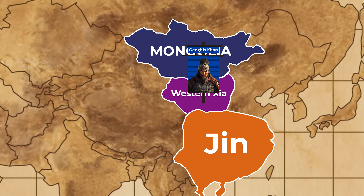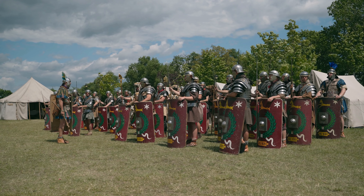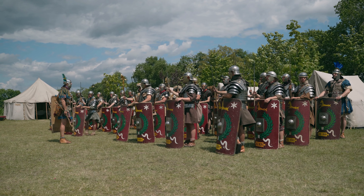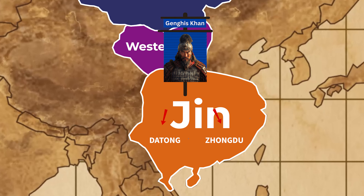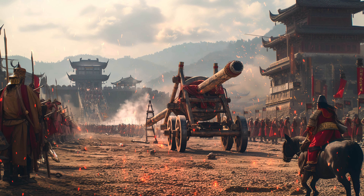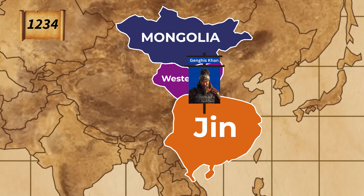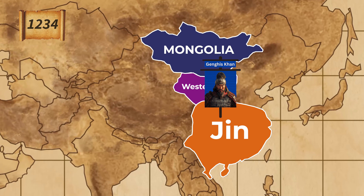Genghis Khan then turned his attention to the Jin dynasty in northern China. In 1211 he began his campaign with around 50,000 to 70,000 troops. The Mongols captured significant cities like Datong and the capital Zhongdu — modern-day Beijing — in 1215. The siege of Zhongdu was particularly notable for the Mongols' use of captured Chinese engineers who built siege weapons. The Jin dynasty continued to resist until 1234, long after Genghis's death.